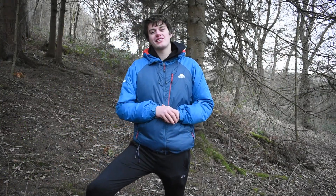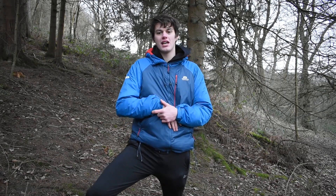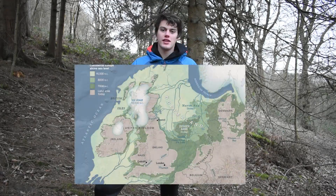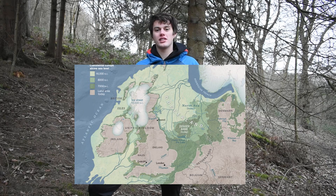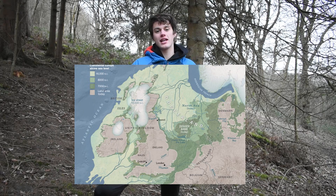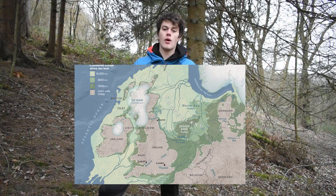It all began when trees started taking over the barren tundra of the UK and Ireland, about 10,000 BC in the last glacial period. This place was called Doggerland, where the last ice age was ending and England was connected to mainland Europe.